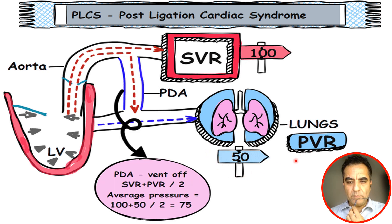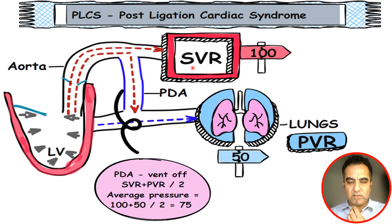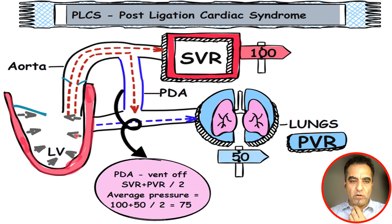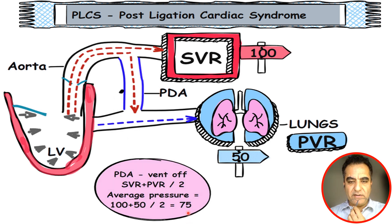So this LV is exposed to a combined pressure — a higher pressure which is SVR and a lower pressure which is PVR. Because of shunting of blood through this PDA, which acts as a vent off to this LV, your LV is exposed to a lower pressure than your actual SVR — that is 75 — instead of 100.